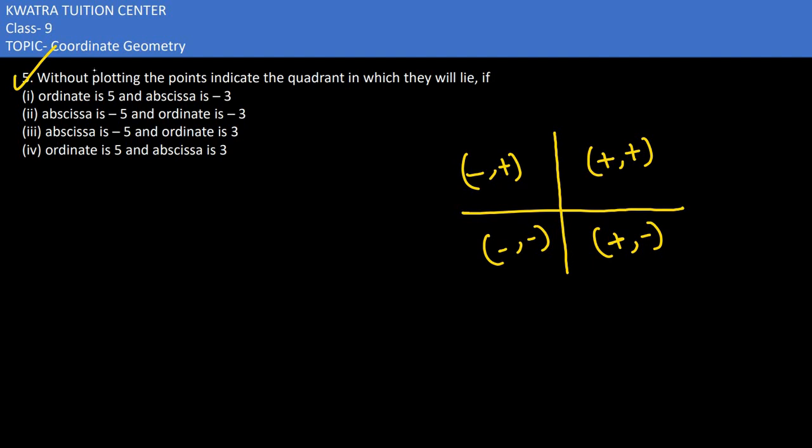So first of all, we have X coordinate is minus 3, Y coordinate is 5. So what is my coordinate? Negative 3 comma 5, which means that it would lie in the second quadrant.